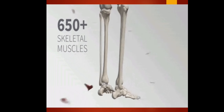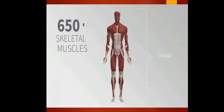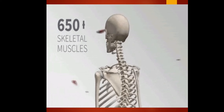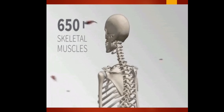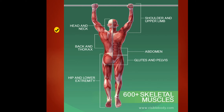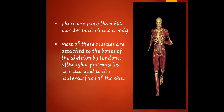Here is a video showing the appearance of the muscles inside your body. There are exactly 650 skeletal muscles in our body. These 650 skeletal muscles are not only within your shoulder and upper limb — muscles can also be found in your head and neck, back and thorax, abdomen, hip, and lower extremity.